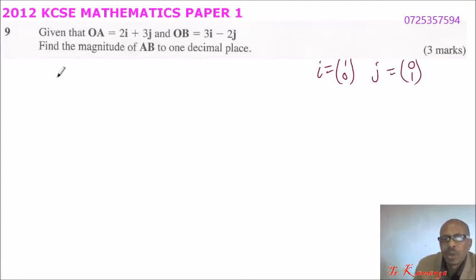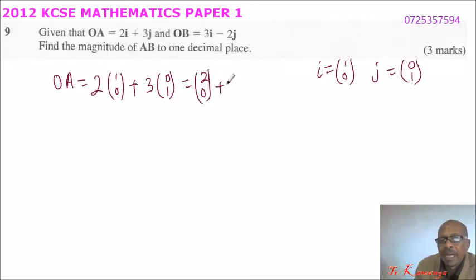So we can write OA equals 2 times (1, 0) plus 3 times (0, 1), which you will be able to get (2, 0) plus (0, 3). That is you multiply the coefficient with the vectors. Here I have multiplied 2 times 1 is 2, 2 times 0 is 0. 3 times 0 is 0, 3 times 1 is 3, which gives 2 plus 0 is 2, and 0 plus 3 is 3. So that is the position vector.